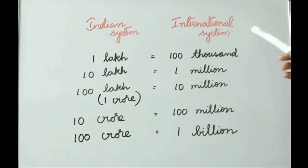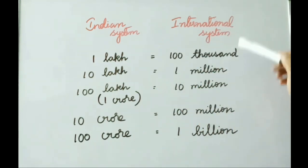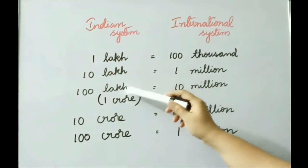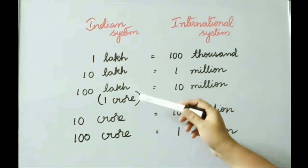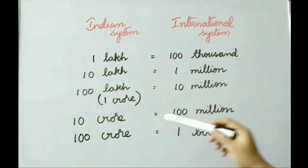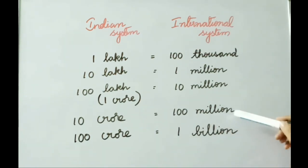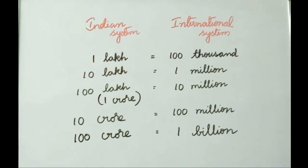Let us see the comparison table between the Indian system and the International system: 1 lakh equals 100,000 (one hundred thousand) in the international system; 10 lakh equals 1,000,000 (one million); 1 crore equals 10 million; 10 crore equals 100 million; 100 crore equals 1 billion. We should learn this table to read numbers in both systems easily.